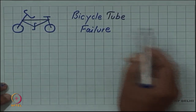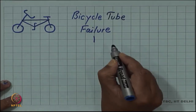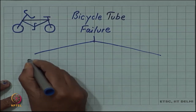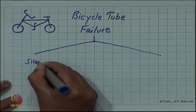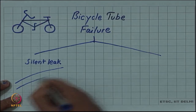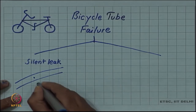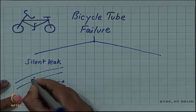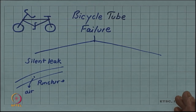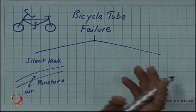Let us look at a more everyday experience of bicycle tube failure. Those of us who use a bicycle know that the tube fails in two different ways. One is a silent leak — there is a hole in the tube and the air gradually comes out. We call this a puncture. The air comes out of the tube gradually; it is a slow process and the hole or puncture does not increase in size — it remains stable.